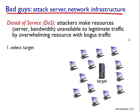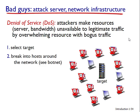Many users today access the Internet via wireless devices such as Wi-Fi-connected laptops or handheld devices with cellular Internet connections. While it is great to have Internet access everywhere, it also creates a major security vulnerability by placing a passive receiver in the vicinity of the wireless transmitter. That receiver can obtain a copy of every packet that is transmitted, including passwords, social security numbers, trade secrets, and private personal messages. A passive receiver that records a copy of every packet that flies by is called a packet sniffer.